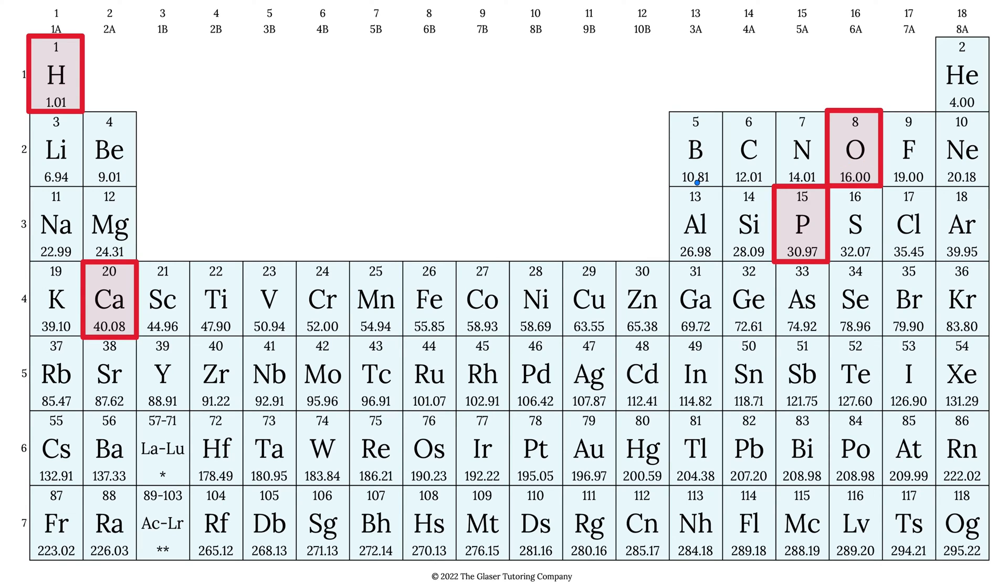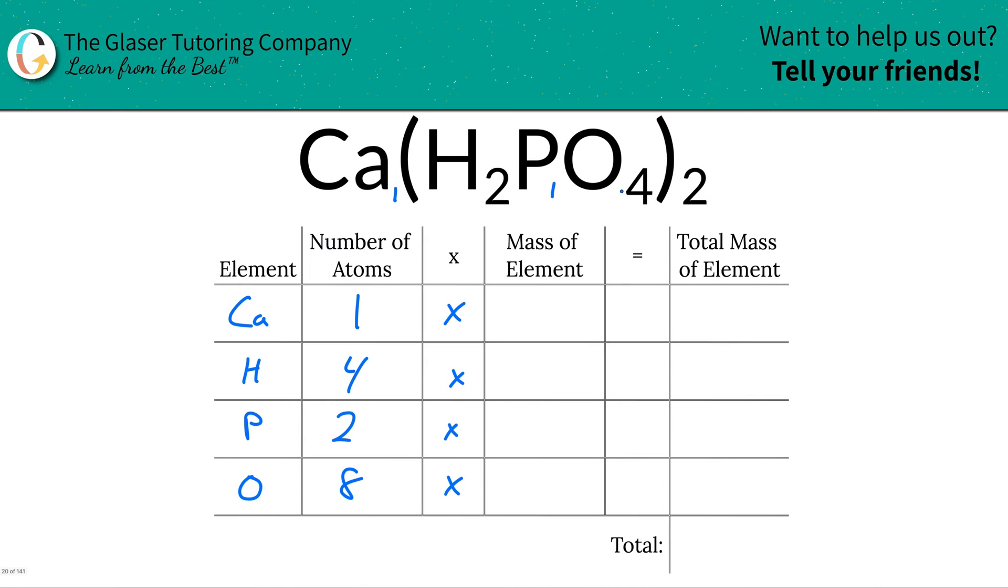And these are now going to get written down. Now they will represent grams per mole if you're talking about molar mass, or AMU if you're talking about molecular mass. So let's write it down. Calcium was 40.08, hydrogen was 1.01, phosphorus was 30.97, and oxygen is 16.